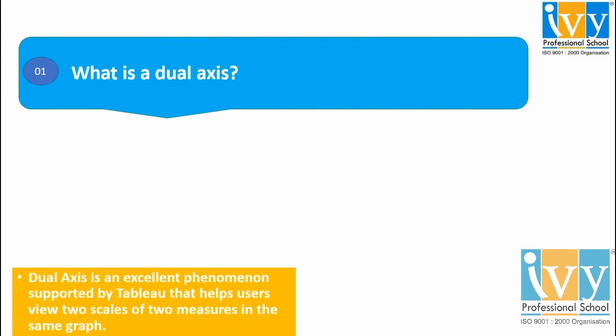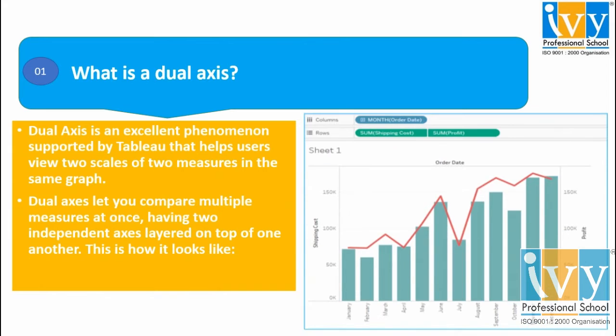Question number 1: What is a dual axis? In Tableau, dual axis is a phenomenon supported by Tableau that helps users view two scales of two measures in the same graph.